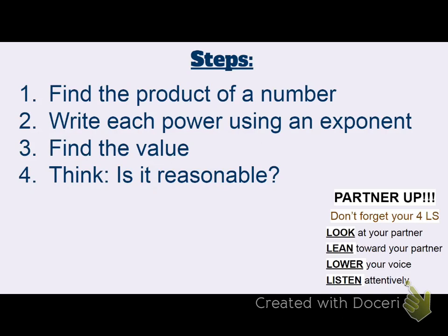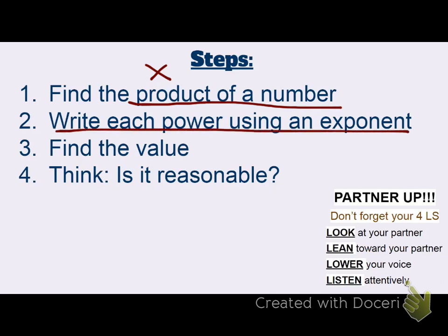Here are the steps that are going to help us today. Step 1: find the product of a number. Product in math means multiplication — the answer to a multiplication problem — so I'm probably going to use factors when multiplying. Step 2: write each power using an exponent, using the product from step 1. Step 3: find the value — solve. And finally, step 4: is it reasonable? Does my answer make sense?